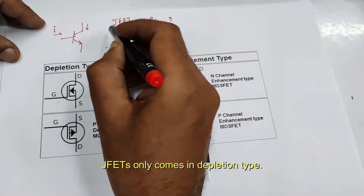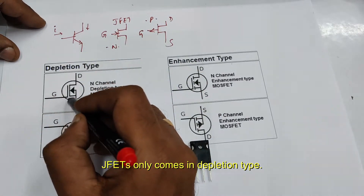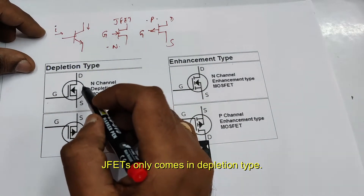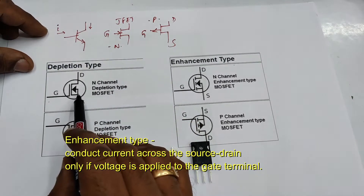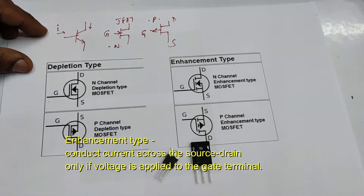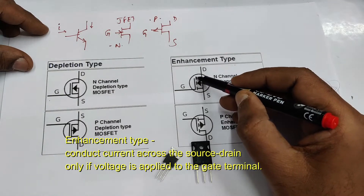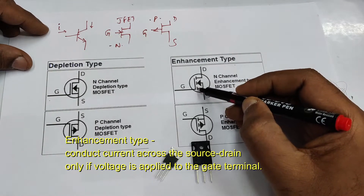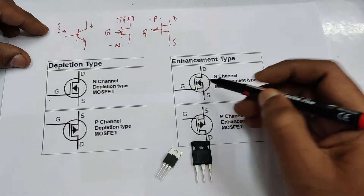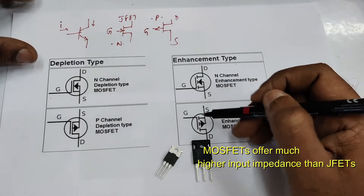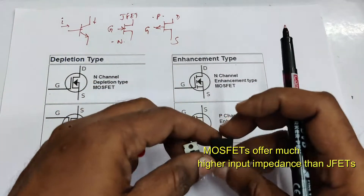MOSFETs can be considered an advanced type of JFET. MOSFETs have an insulated gate and the terminals are gate, drain, and source. They come in depletion as well as enhancement type. Enhancement MOSFETs conduct only when there is a gate voltage, but depletion types conduct even if the gate voltage is zero. MOSFETs offer very high input impedance compared to JFETs.